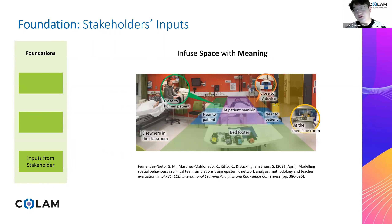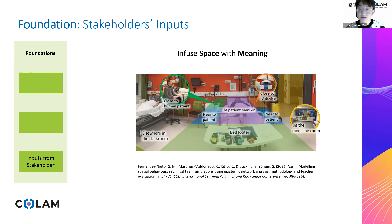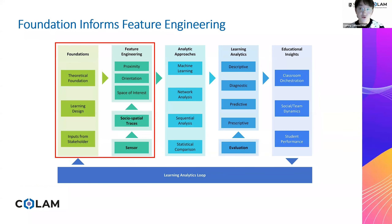The inputs from educational stakeholders are also essential for infusing space with meaning. Their input would inform on whether the educational construct of interest can actually be captured from spatial traces, as well as the possible meaning behind different spatial behaviors across space and time. For example, even the space around a patient bed in clinical simulation can be further divided into different meaningful spaces based on teachers' input. These three foundations inform the feature engineering process of how to extract different features from social spatial traces.